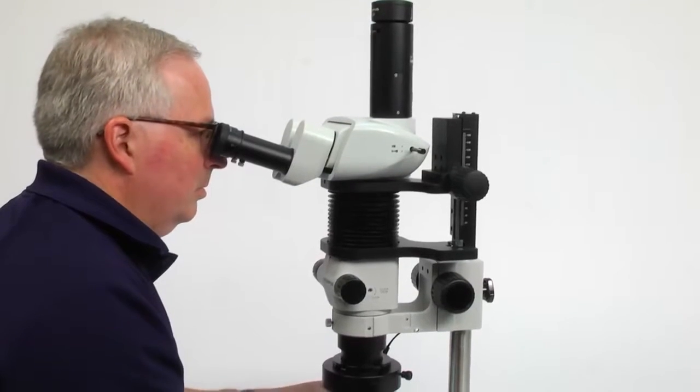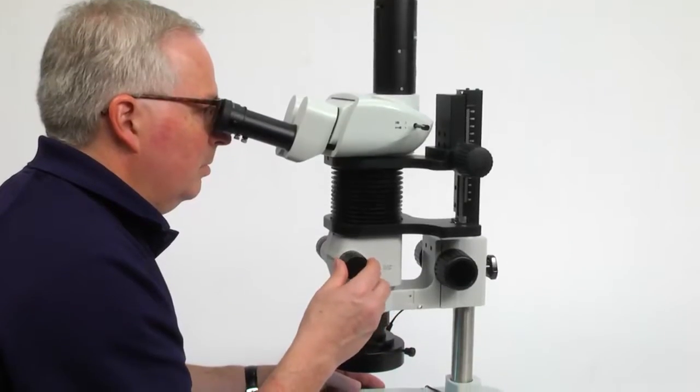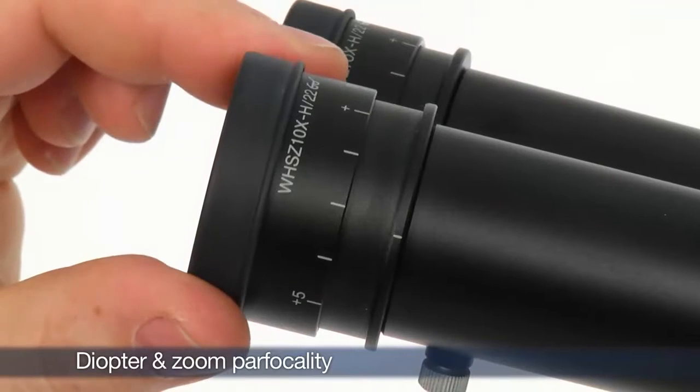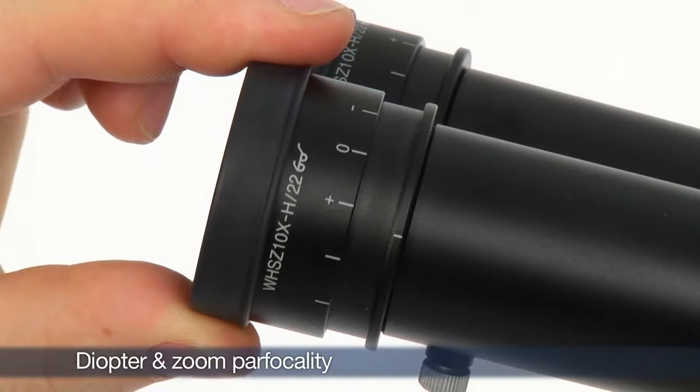Next, the stereo microscope must be properly focused to provide a clear image from low to high magnification. The diopter and zoom parfocality must be properly adjusted to provide consistently clear images through the range of magnifications.